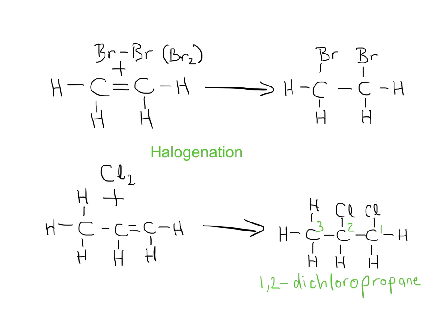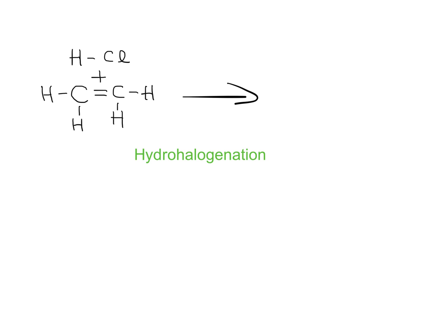Now we'll look at a slightly more complex version where we add hydrogen and a halogen together — that's called hydrohalogenation. The name comes from hydro (hydrogen) plus halogen. We're going to do hydrohalogenation with HCl. There's a double bond which will break; H goes onto one carbon and Cl onto the other. Pause the video and predict the product — you should have two carbons with the original hydrogens, a single bond between them, and the new H and Cl added.